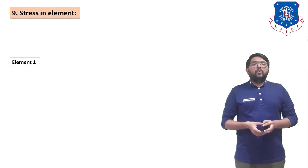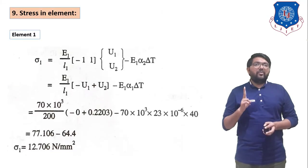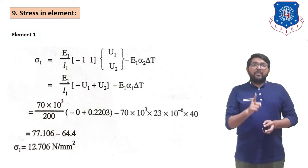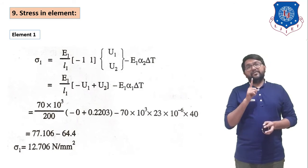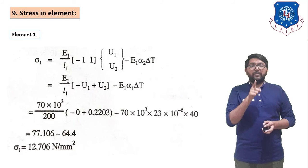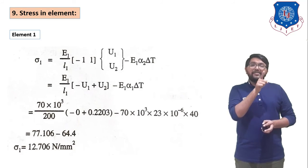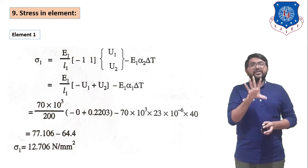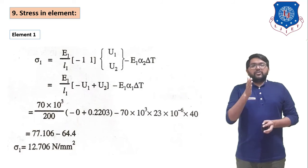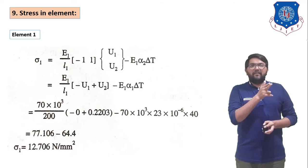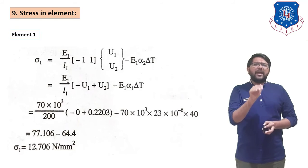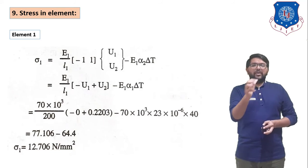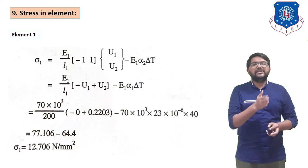Now find element stresses. For element 1, the equation including temperature effect is: σ₁ = (E₁/L₁)(−U₁ + U₂) − E₁α₁ΔT. Substituting all values (E₁, L₁, U₁ = 0, U₂ = 0.2203, alpha₁, ΔT = 40), we get σ₁ = 12.706 N/mm².